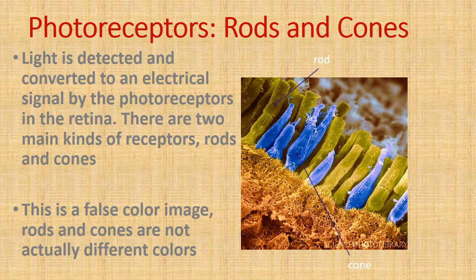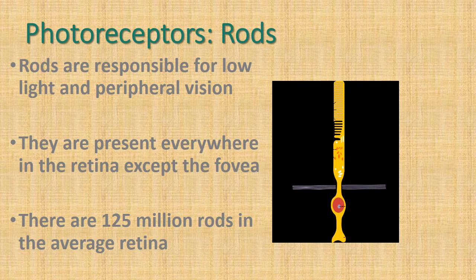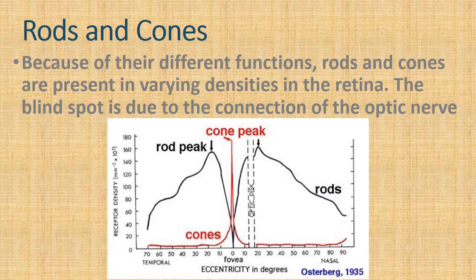Light is detected and converted to an electrical signal by the photoreceptors in the retina. There are two main kinds: rods and cones. Cones are responsible for fine detailed and color vision and are clustered near the center of the retina, called the fovea — there are about 5 million cones. Rods are responsible for low-light and peripheral vision; they are present everywhere in the retina except the fovea, and there are about 125 million rods.